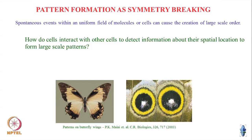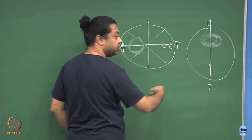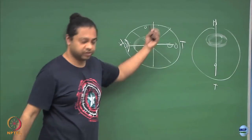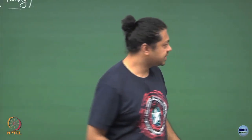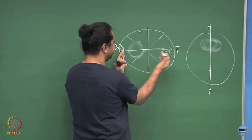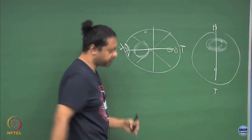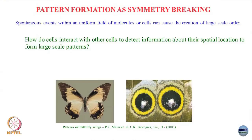Another way to frame this question is: in this system of different cells, how do cells interact with other cells to detect information about their spatial location in order to form these large-scale patterns? How does the cell over here know it has to form the head, how does the cell over there know it has to form the tail, how does something in the middle know it has to form the hands? It will talk to other cells to determine its relative position in the embryo and then have an appropriate developmental cascade.